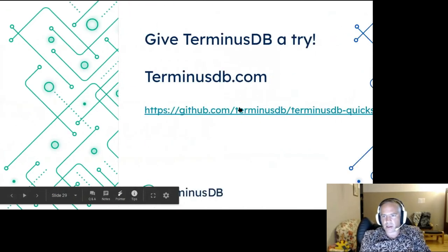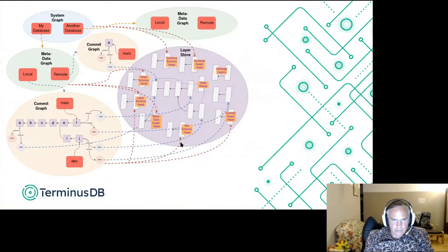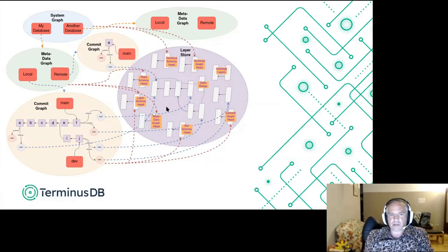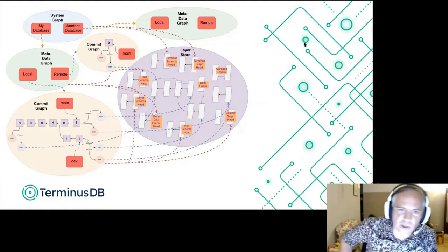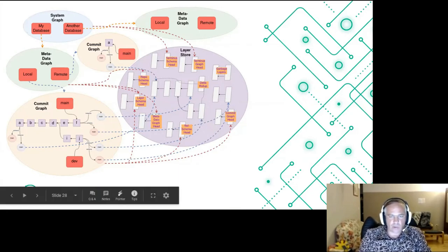The overall architectural picture shows the system graph with information about the name of a layer, which gives you the head of a metadata graph. From there, local points to the head of the commit graph, where you can find the main branch, and from there find the head layer for the main instance graph and the main schema graph. The user writing queries over the REST API doesn't know about any of this — they just see that they have a database with some branches, revisions, and can write queries against the instance data or schema information.